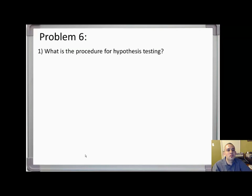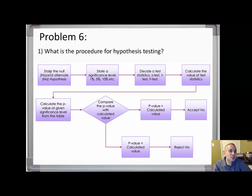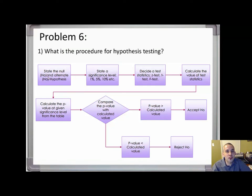Now we're getting into more statistics-oriented components, very valuable for medical physics research. Problem six: run through the entire procedure for hypothesis testing. I'll be going through each step with lots of examples — this is going to be the essence of the rest of both lectures, and I think I'll finish off with a couple of questions on chi-square.